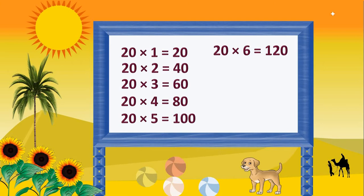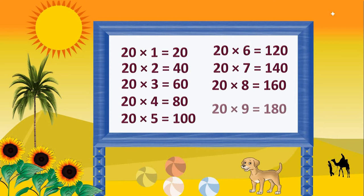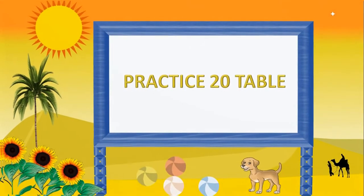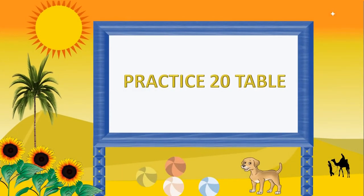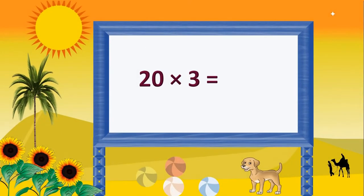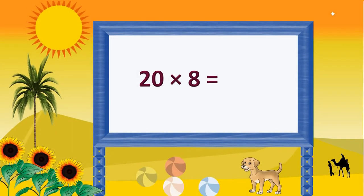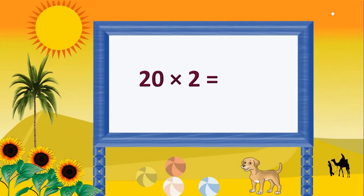20 times 6 is 120, 20 times 7 is 140, 20 times 8 is 160, 20 times 9 is 180, 20 times 10 is 200.